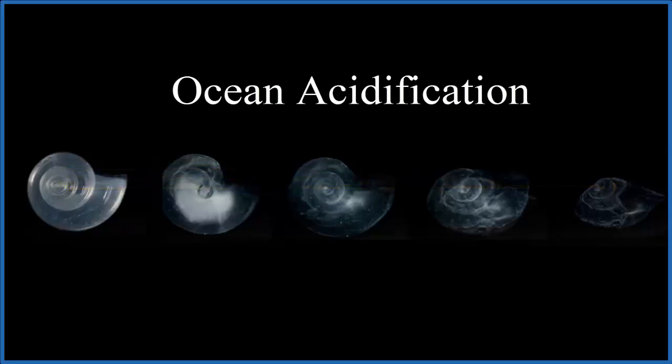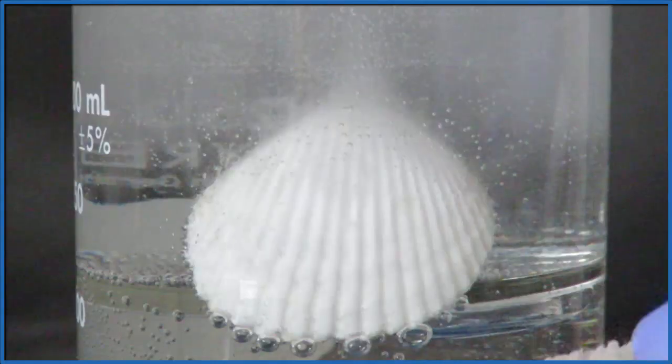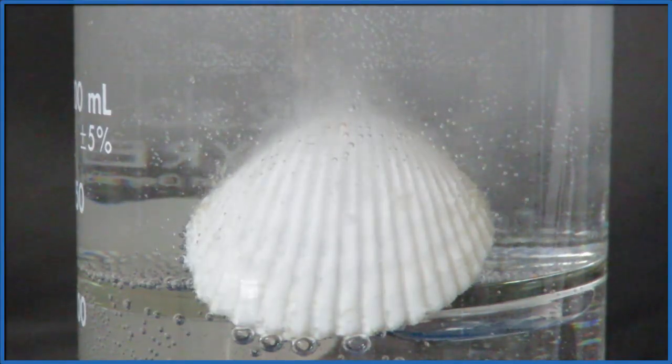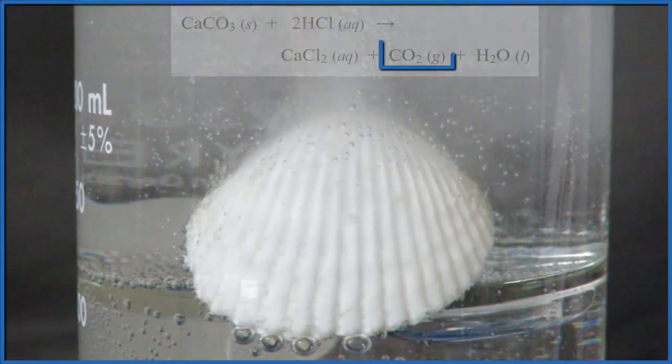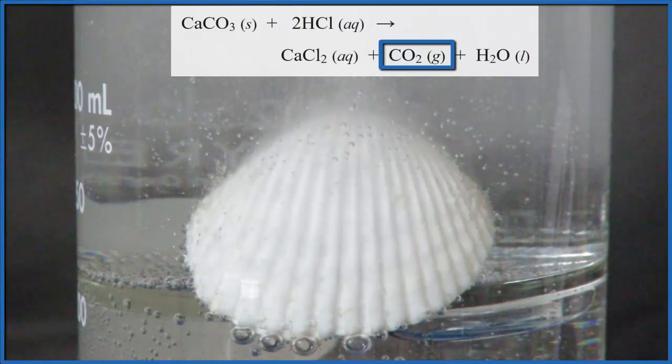So watch what happens when I take a shell, a seashell, and I put some hydrochloric acid on. Again, this is stronger than what would happen with ocean acidification, but you can see those bubbles, that's the carbon dioxide gas we saw earlier.